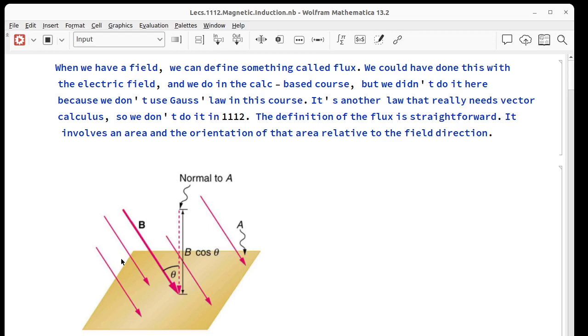When we have a field of any kind, we can define something called a flux. We could do this with the electric field, and in the calculus-based course we do it because we need it for something called Gauss's law. We don't use Gauss's law in this course because you need vector calculus for that.